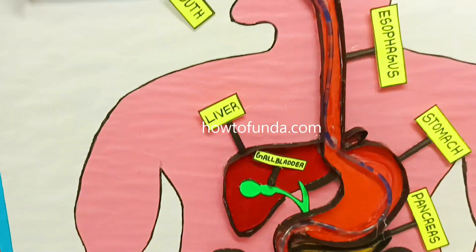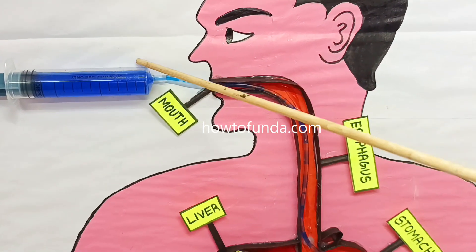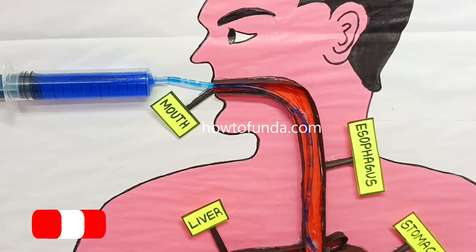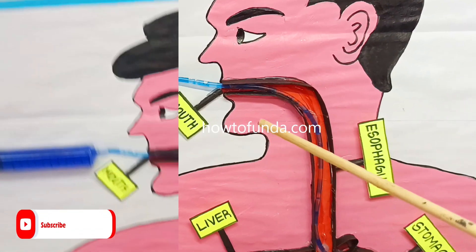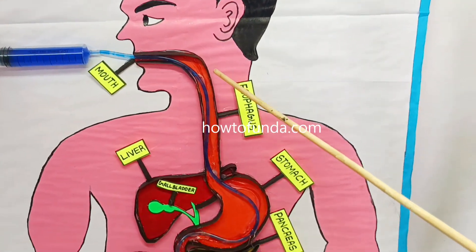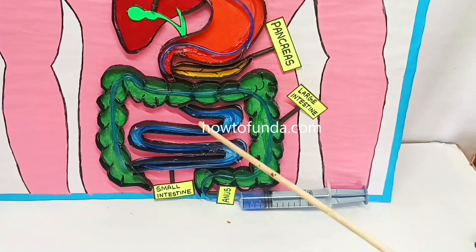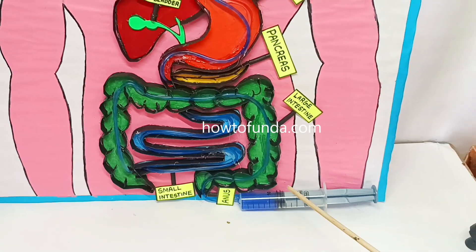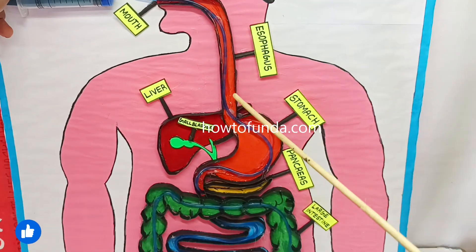Now we are going to demonstrate how the digestive system works by using simple syringes — showing how food is pumped from the mouth to the anus. As you can see, the food is moving from top to bottom through to the anus, illustrating the entire process.